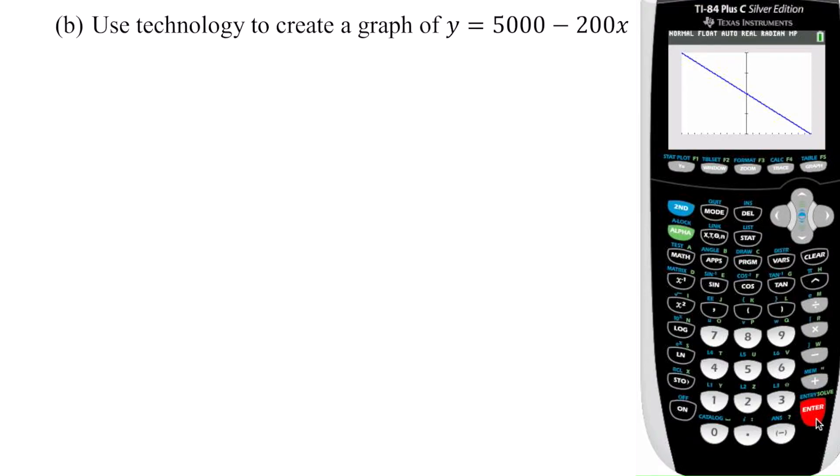So zoom fit will give you what the calculator thinks is a good view. Firstly, it's not that great of a view because it's missing a lot of information. For one, where's the x-axis? It's just gone. This blank line tells me that we're above the x-axis. Furthermore, where is my x-intercept? I can't see that at all. So let's go ahead and fix this.